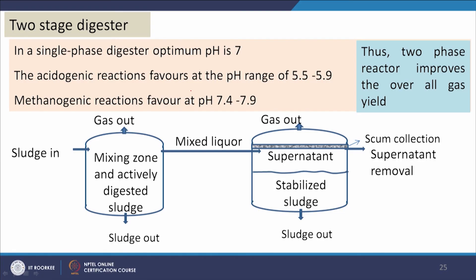Since acetogenic reactions favor pH 5.5–5.9 and methanogenic reactions favor pH 7.4–7.9, performing these reactions in two separate reactors at their respective optimal pH values greatly improves performance compared to a single-step reactor at pH 7–7.2. In a two-stage process, biogas is first produced in the acetogenic phase reactor, then the leachate is sent to the second stage for methanogenic reaction. Biogas is collected from both stages, and sludge is generated in both reactors.